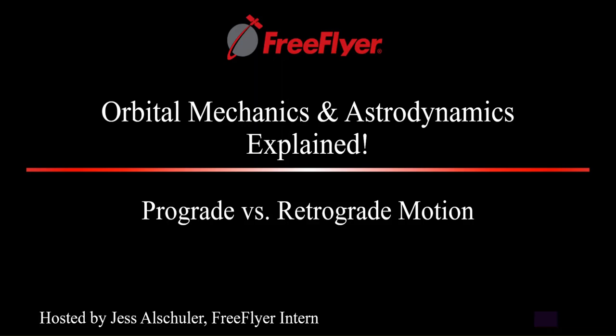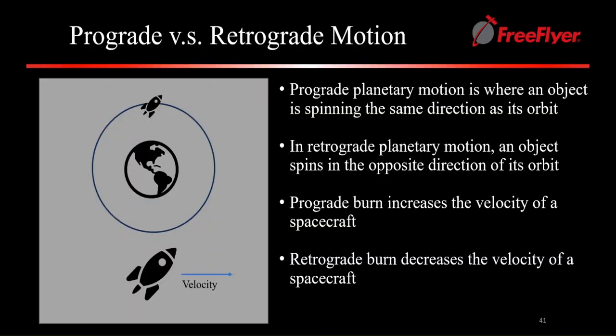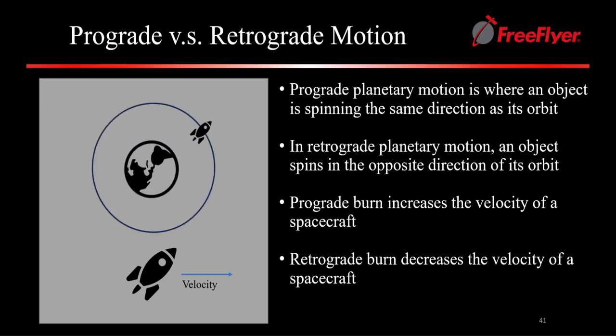Today on Orbital Mechanics and Astrodynamics Explained, we're going to be talking about prograde versus retrograde motion. In orbital dynamics, prograde is where an object spins in the same direction as its orbit, whereas in retrograde motion an object spins in the opposite direction of its orbit.